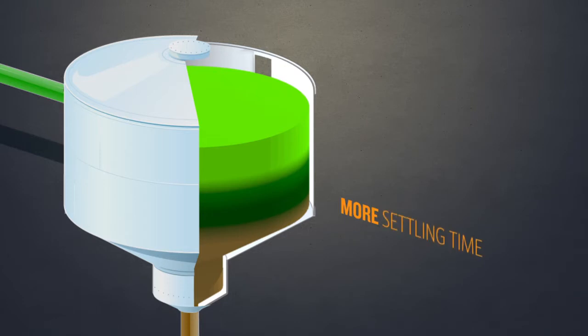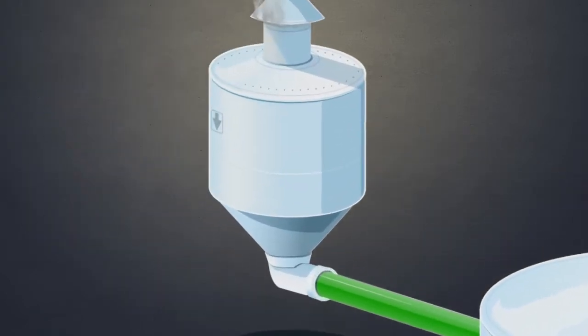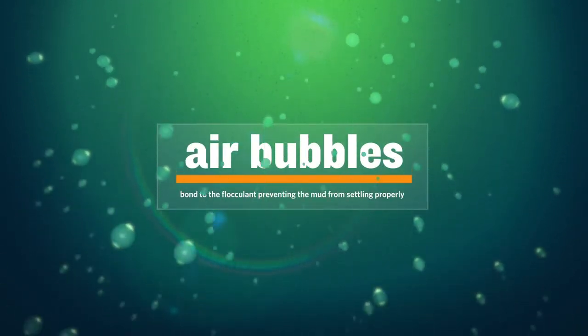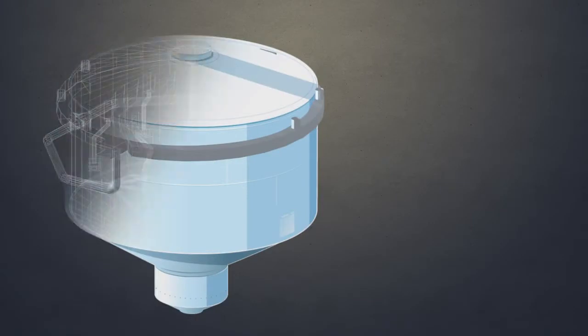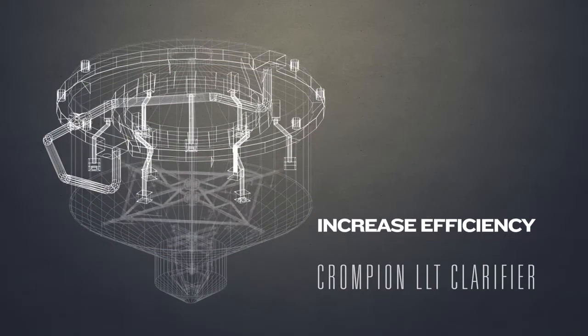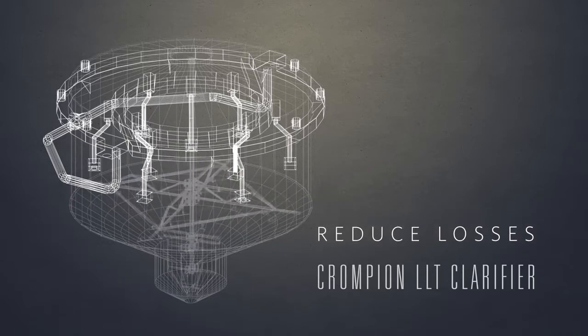More settling time means more inversion of sugar, which means sugar losses and more color. Additionally, improperly placed flash tanks allow for more air entrainment. When air gets into the clarifier, it keeps mud from settling properly. A Crompion LLT clarifier can actually help increase efficiency and reduce clarifier losses.